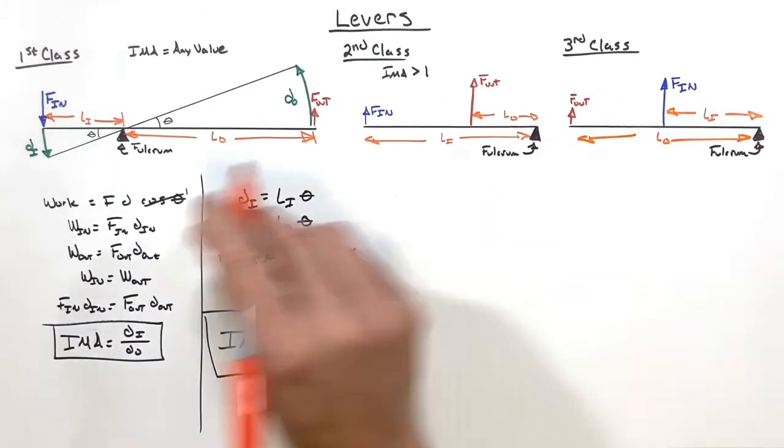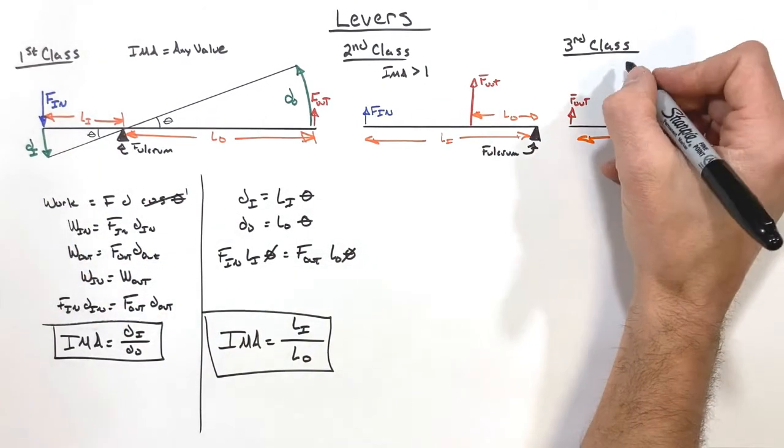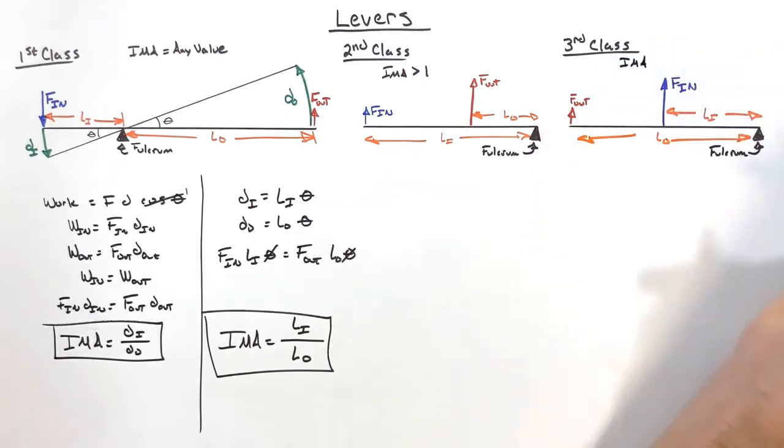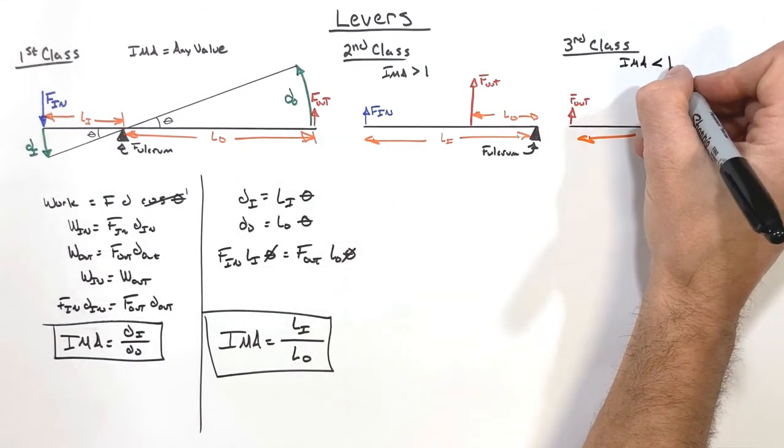And that means for a third class lever, the IMA is always going to be less than one.